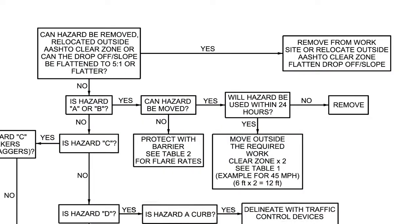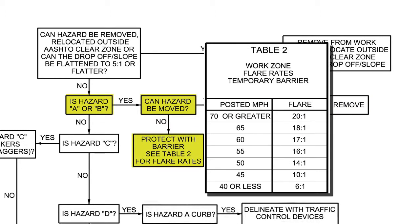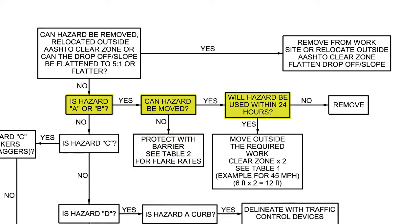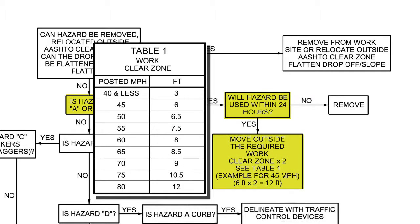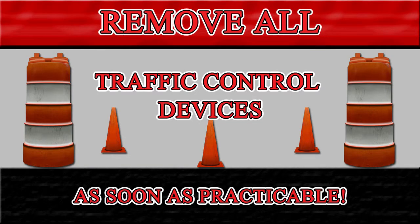If the hazard cannot be removed, is the hazard Type A or Type B — non-working equipment or stockpiled material? If you determine that it is, then it cannot be removed. If yes, will the hazard be used within 24 hours? If no, then the hazard must be removed. If the hazard cannot be moved at all, protect with barrier and see Table 2 to ensure that it is placed at the correct flare rate. If the hazard will be used within 24 hours, then move the hazard two times the work clear zone according to Table 1. Remember, according to MUTCD Chapter 6B, all temporary traffic control devices shall be removed as soon as practical.